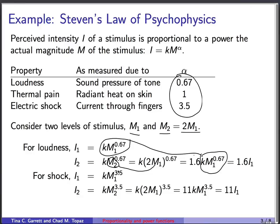In contrast, for electroshock, the exponent is 3.5. So here's the original perceived intensity i1. And i2, we just have to plug in m2 equal to 2m1. And when we expand, we find this expression here, where we recognize km1 to the 3.5 is the same as the original perceived intensity.